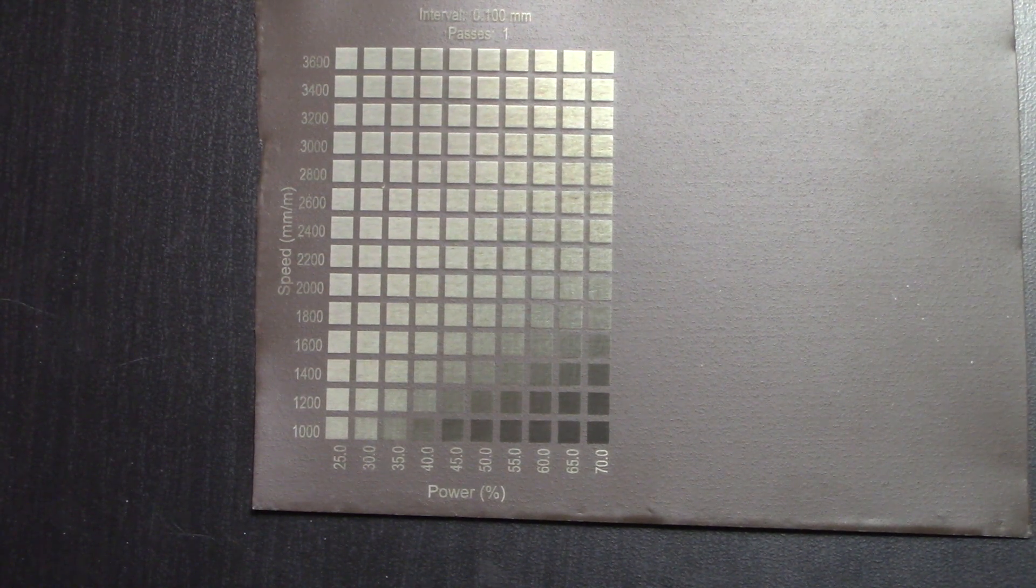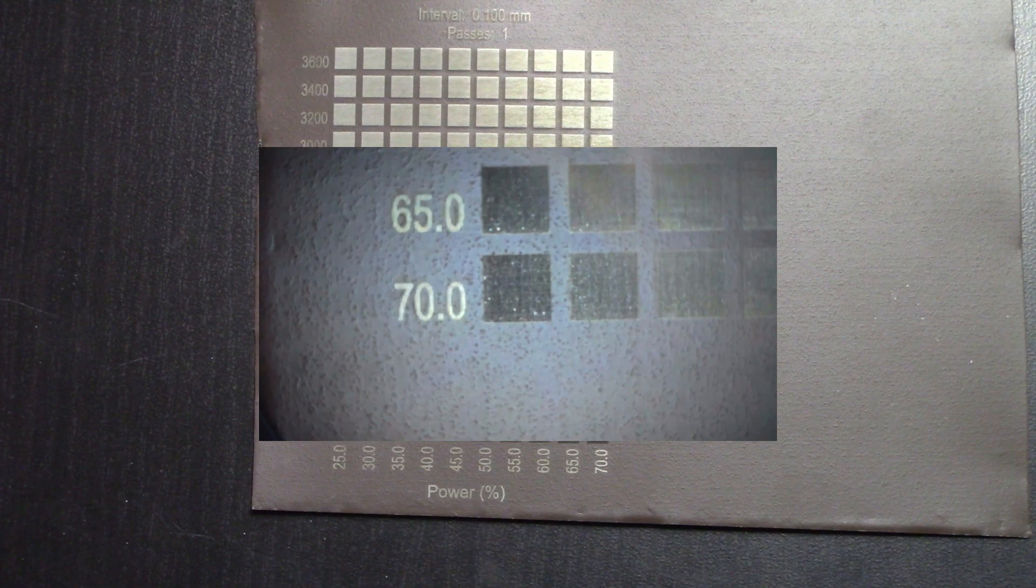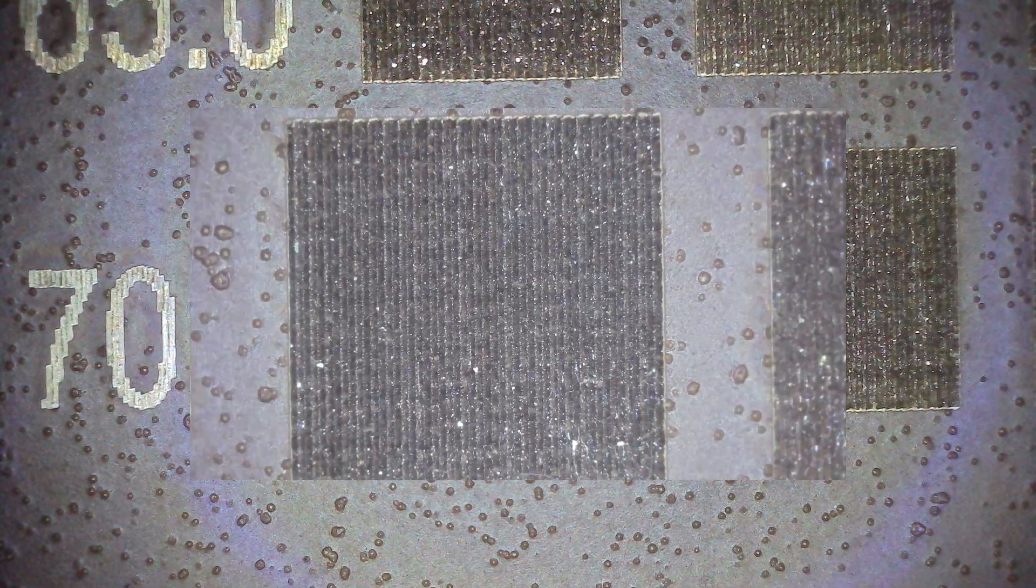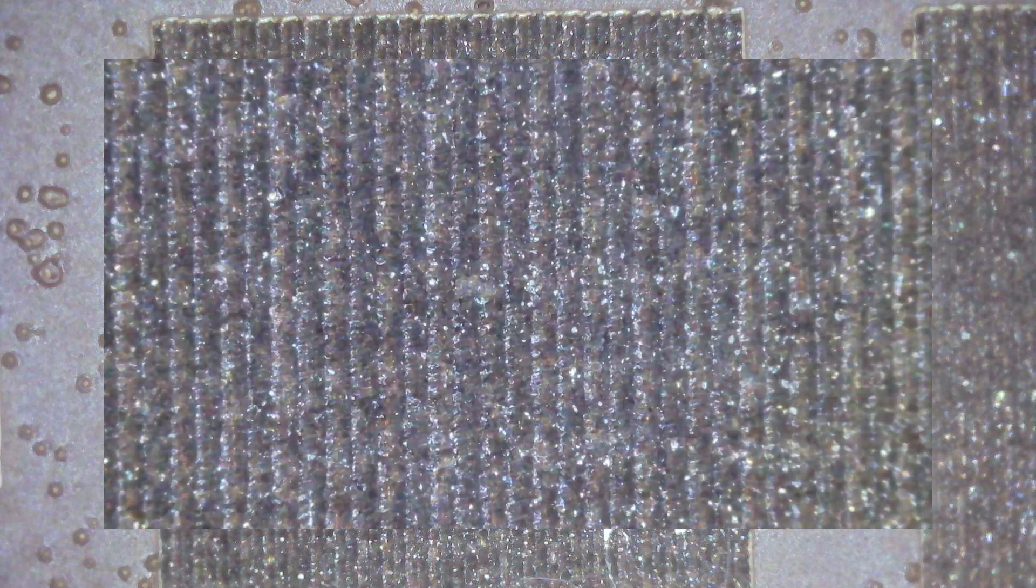Zooming in on this 70% power at 1,000 millimeters per minute, we can see kind of that something's happening here. It's dark, it's not the aluminum color underneath. My assumption is that the coating is getting melted, and with the extra power ends up just sticking on here.